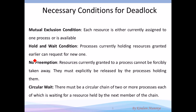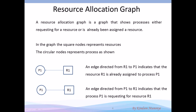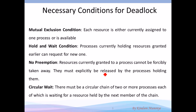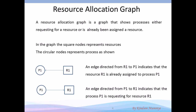It holds and waits. Third, no preemption means you can't forcibly take away a resource from a process that it has been granted. A process must explicitly release the resource before it can be used. Fourth, circular wait: two or more processes are waiting for a resource held by the next member of the chain.